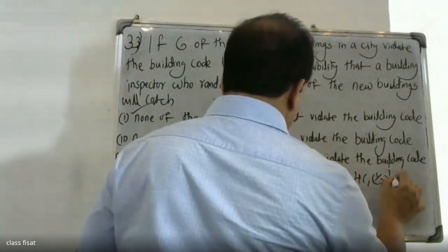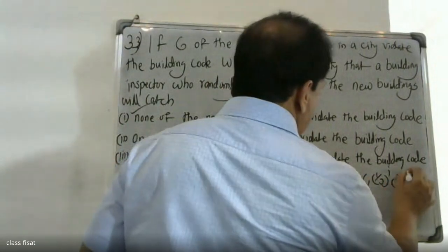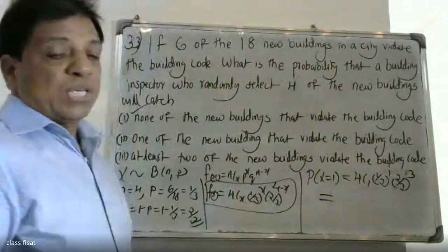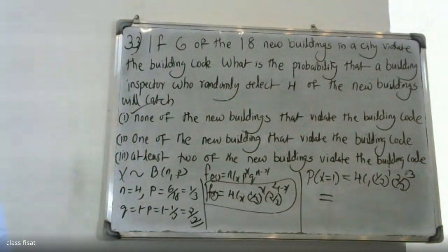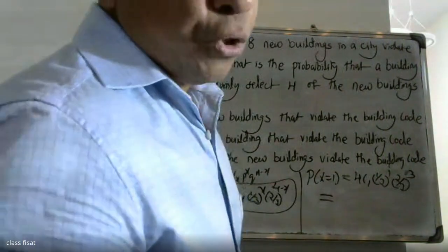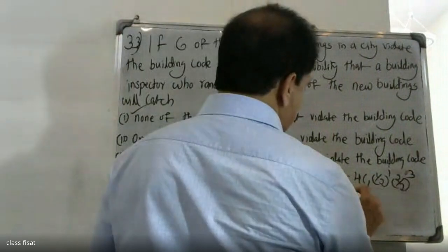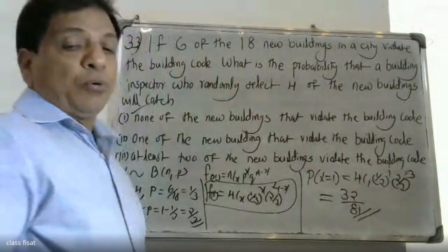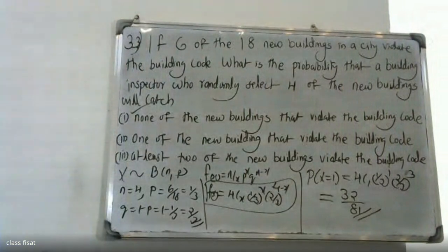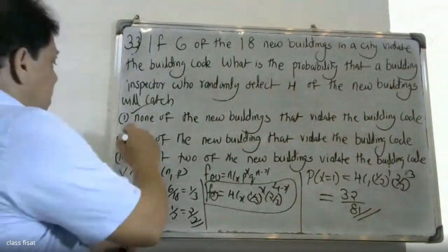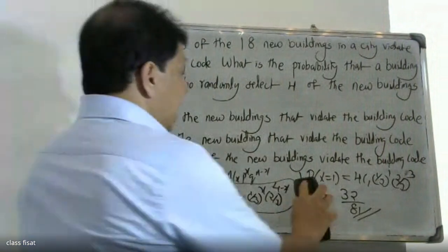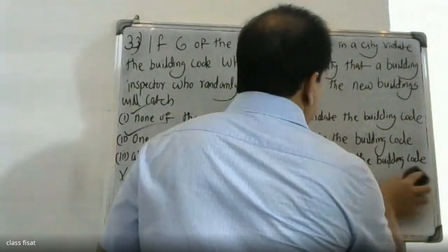For the second question, one of the new buildings violates the building code, so x equals 1. We compute 4C1 times (1/3) raised to 1 times (2/3) raised to 3. Calculating the value gives us 32/81. So the probability that exactly one building violates the code is 32/81.